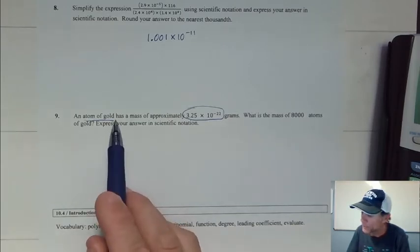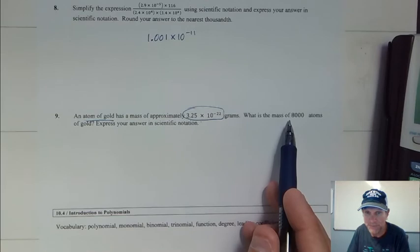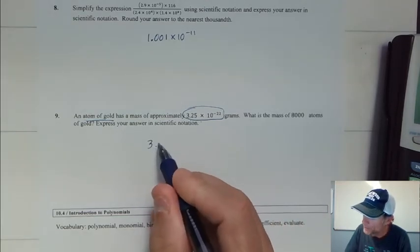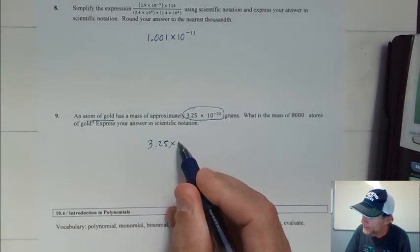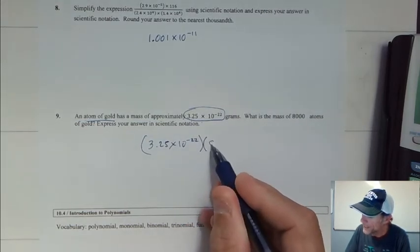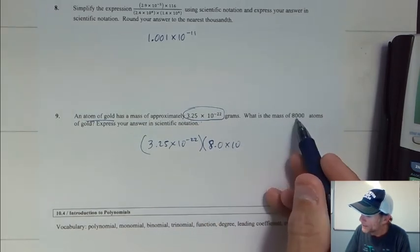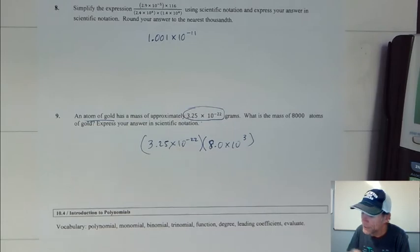So an atom of gold has a mass of this, and then we have 8,000 of those. So what we would do is we do 3.25 times 10 to the negative 22nd times 8.0 times 10 to the 3rd.